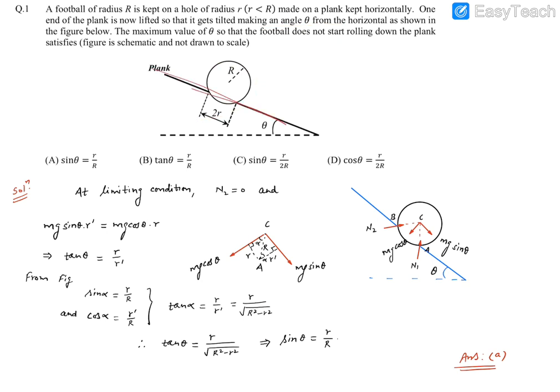So initially this plank was horizontal, so it was somewhat like this, and this football was placed over here. Now one end has been lifted like this, so it started making an angle theta from the horizontal, as shown in the figure.